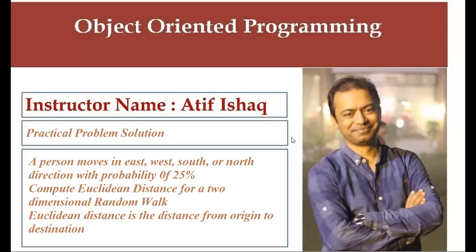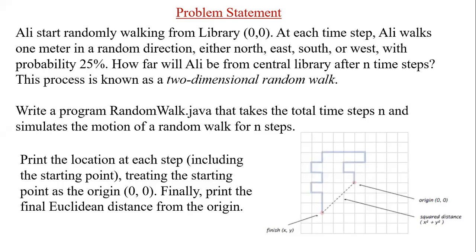The Euclidean distance is the distance from origin to the destination. The problem is that Ali starts randomly walking from a library. At each time step, Ali walks one meter in a random direction — either north, east, south, or west — with a probability of 25 percent each, meaning he can move in all directions with equal probability.